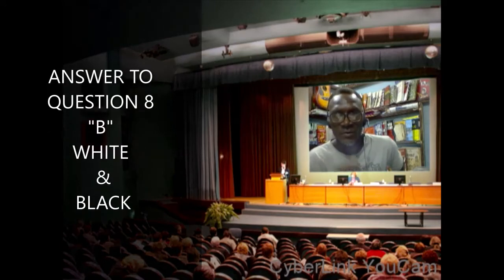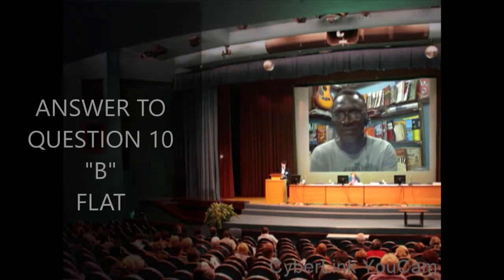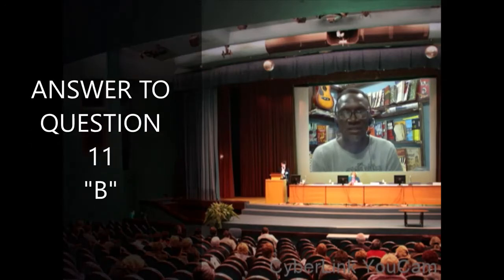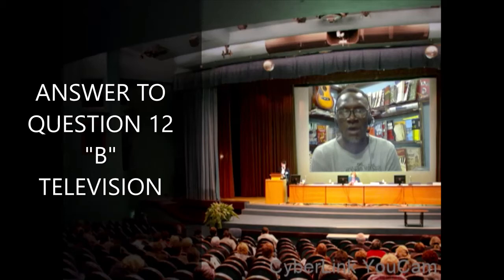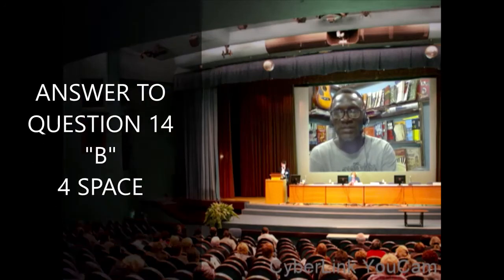Question number eight: piano consists of dash and dash — the answer is white and black. Question number ten: the white keys are called — the answer is B, flat. Question number eleven: the music alphabet are dash — the answer is B. Question number twelve: dash is used for advertisement — the answer is B, television. Question number thirteen: a staff consists of dash lines — the answer is B, which is five lines.